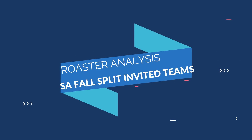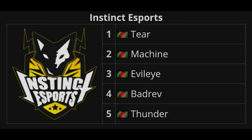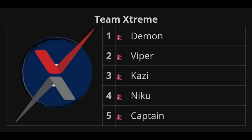We will look at the current roster conditions. The team DE has an announced roster including Vado, Rated, and Illusion — DE is more than good enough to receive the invite. The previous roster had Tear, Machine, Evil Eye, Bardev, and INES. That means they have at least 3 players retained, so they are fine enough.